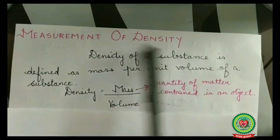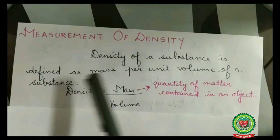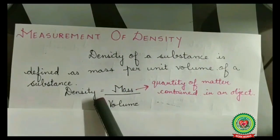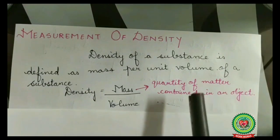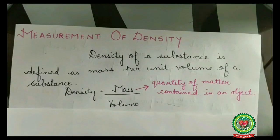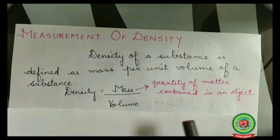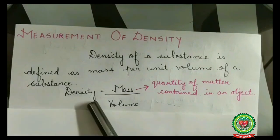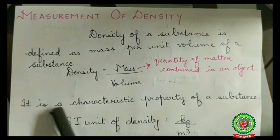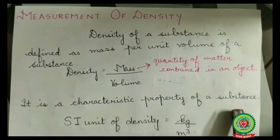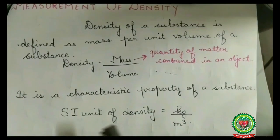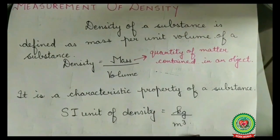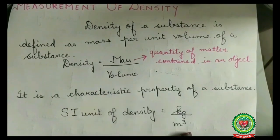What is density? Density of a substance is defined as mass per unit volume of a substance. Density equals mass upon volume, where mass is the quantity of matter contained in an object, and volume is the amount of space occupied by an object. Density is a characteristic property of a substance — each substance has its own density at room temperature. The SI unit of density is kg per meter cube.